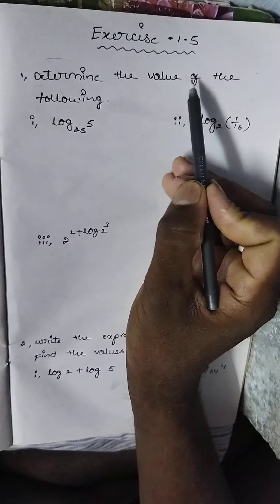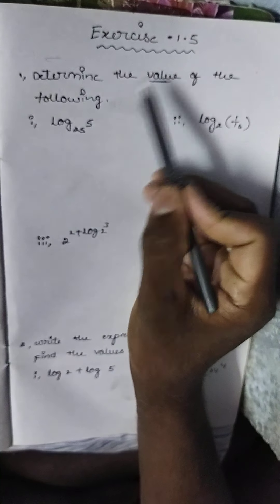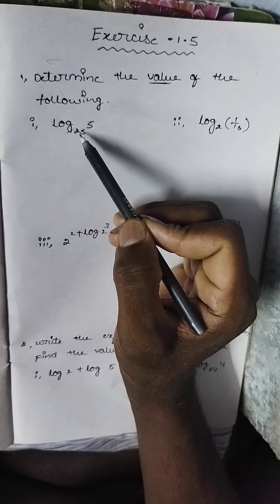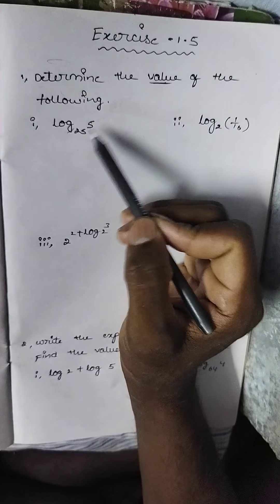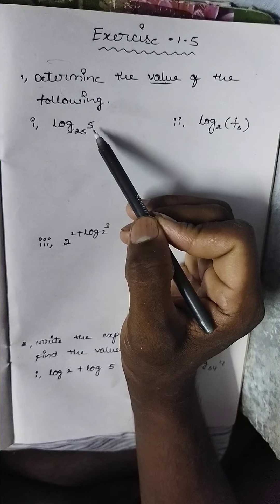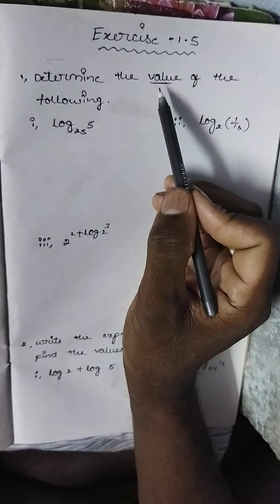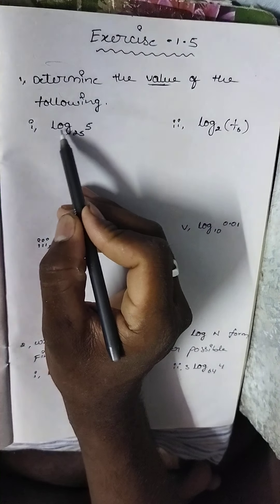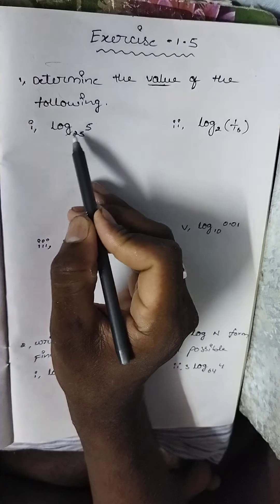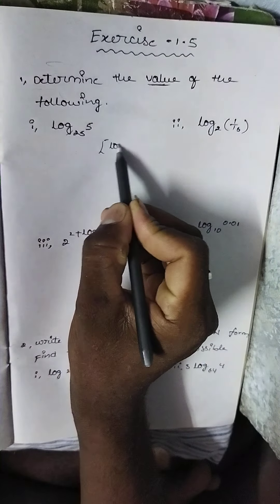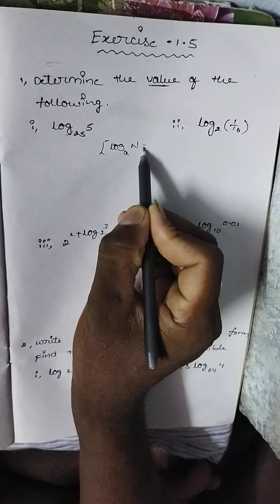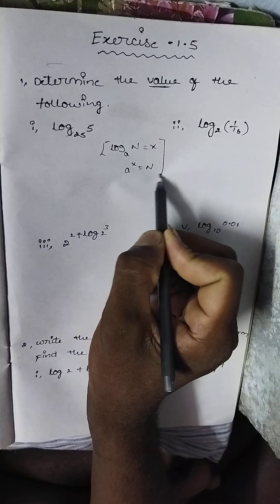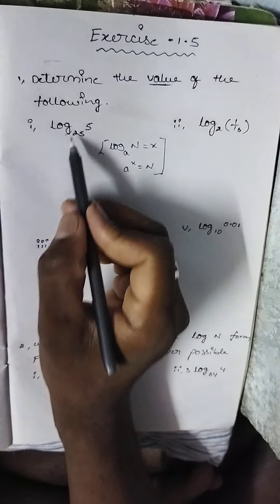Today I want to explain: determine the value of the following. When he asks for the value, the answer will be a single round integer. First of all, check in what form the expression is given. It is in the form of log x with base a, and we know the formula: log base a of n equals x means a to the power x equals n.